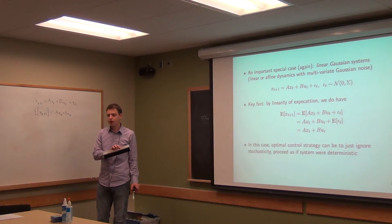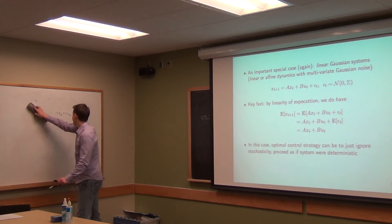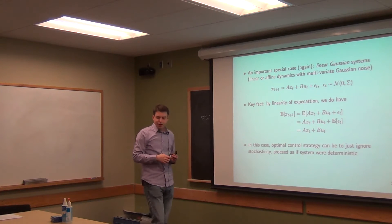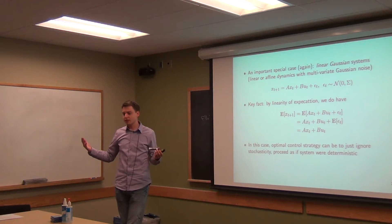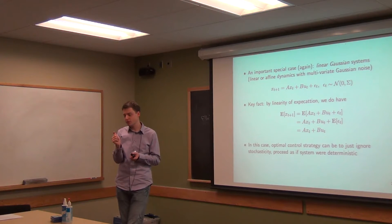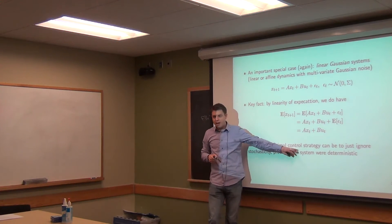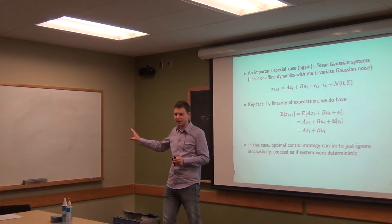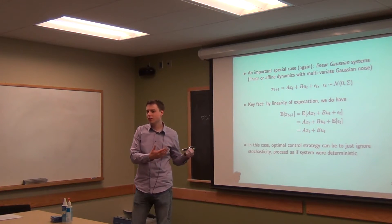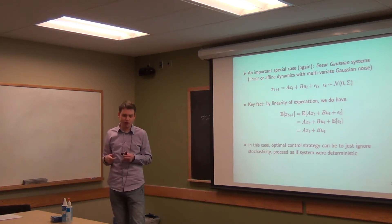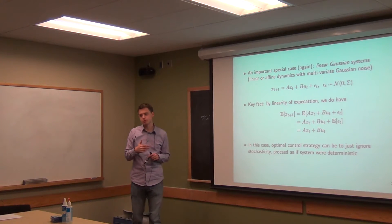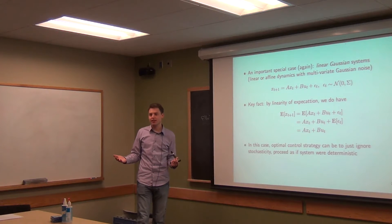It's useful to know that this linear Gaussian case is a special tractable case. It turns out that for this setting, control is oftentimes very easy. When you talk about optimal control in stochastic systems, you have to maximize something like the expected cost, since states are random variables. For a linear Gaussian system, the best strategy is actually just to ignore the noise entirely and proceed as if it were a non-stochastic system. That ends up being not only a good strategy, but actually the optimal strategy in many linear Gaussian cases.